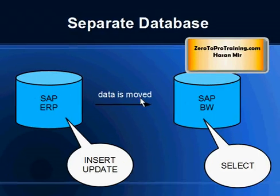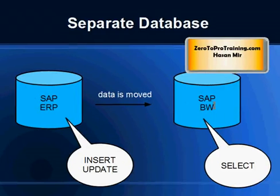So we have an OLTP system like SAP ERP where transactions are happening and the audience is the operational staff, and then we have a data warehousing or OLAP application like SAP BW or BI where the audience is management. Management creates no transactions — they are doing lots of queries. In terms of SQL — Structured Query Language, used to talk to the database —